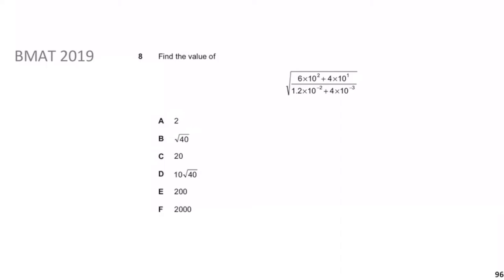This type of question is surprisingly common. First, I write my square root and leave it for now. Look at the numerator and find what power of 10 is common between both terms — that's going to be 10 to the power of 1. So I factor out 10, and inside the bracket: 10 times something gives 6×10², so that's 60, and the other term gives 4. For the denominator, the common power is 10 to the minus 3, giving 1.2×10¹ = 12 and 4.